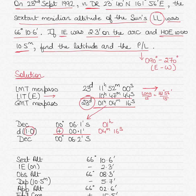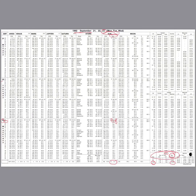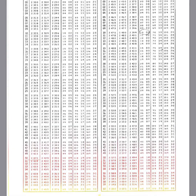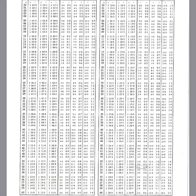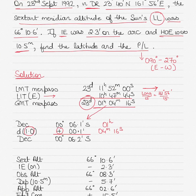I need to find the D correction value for 4 minutes and 16 seconds. Going into the increments page for 4 minutes and 16 seconds, the V or D value was 1, and the correction for 1 is 0.1, which you add to the declination. We have added 0.1 to get the declination corrected for 01 hours 04 minutes and 16 seconds.